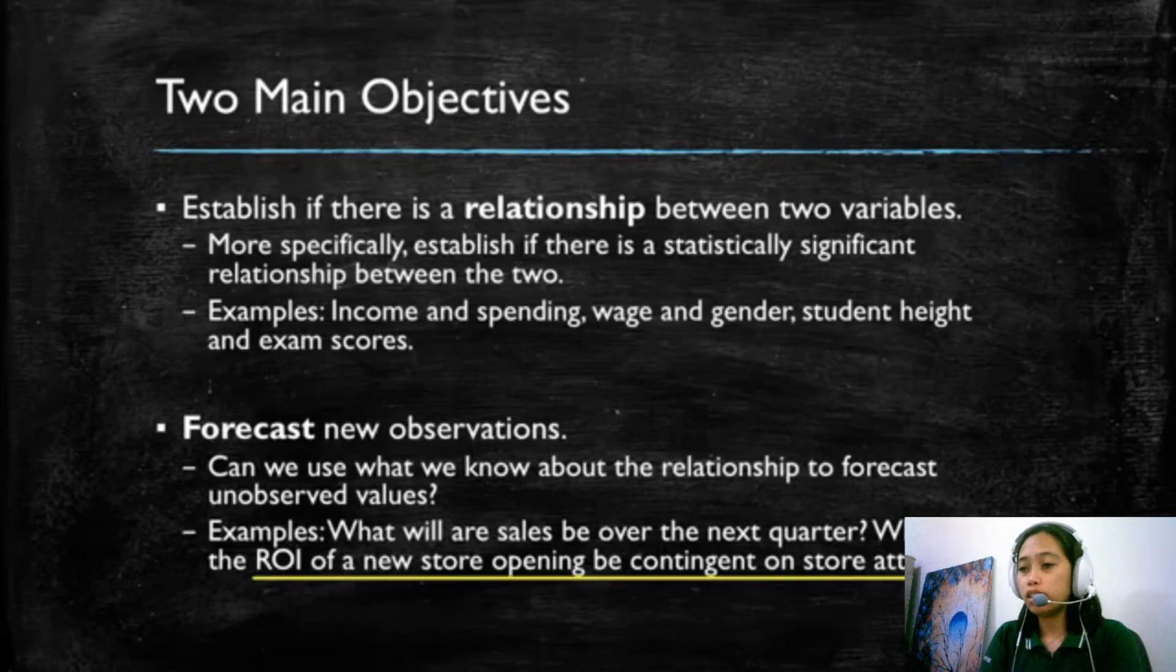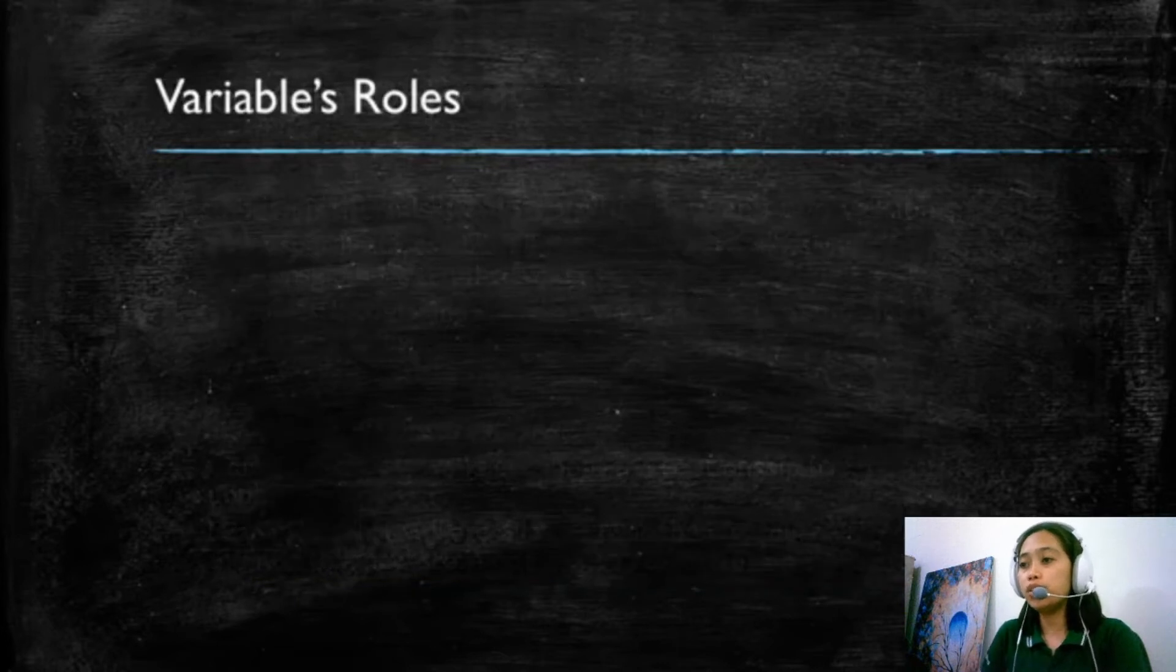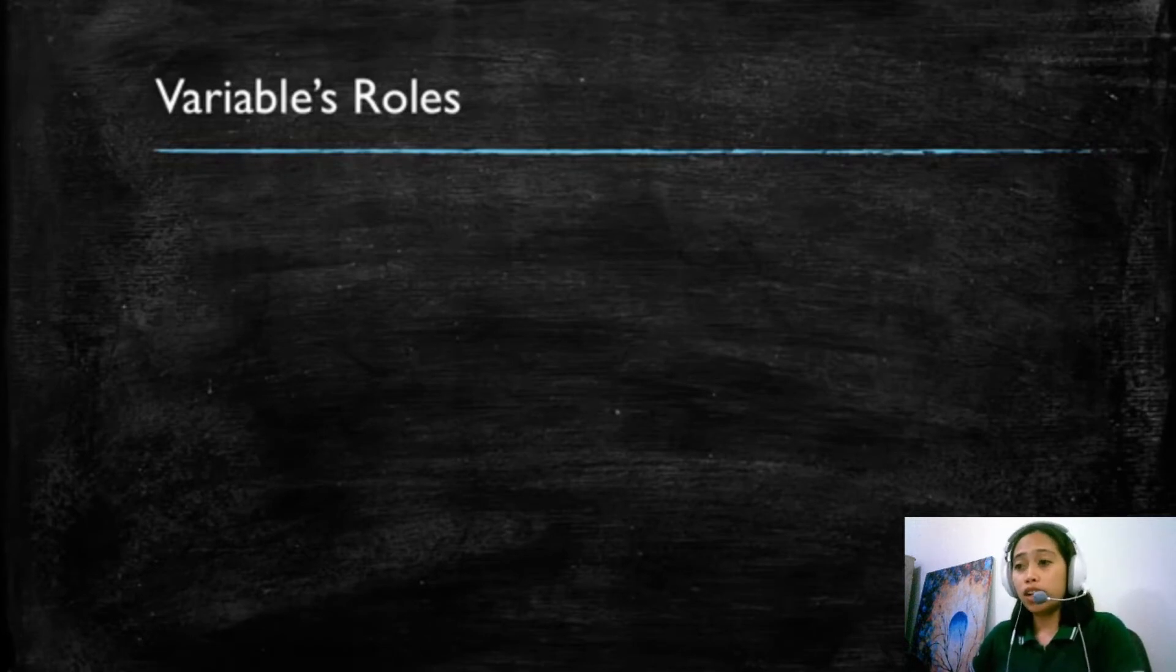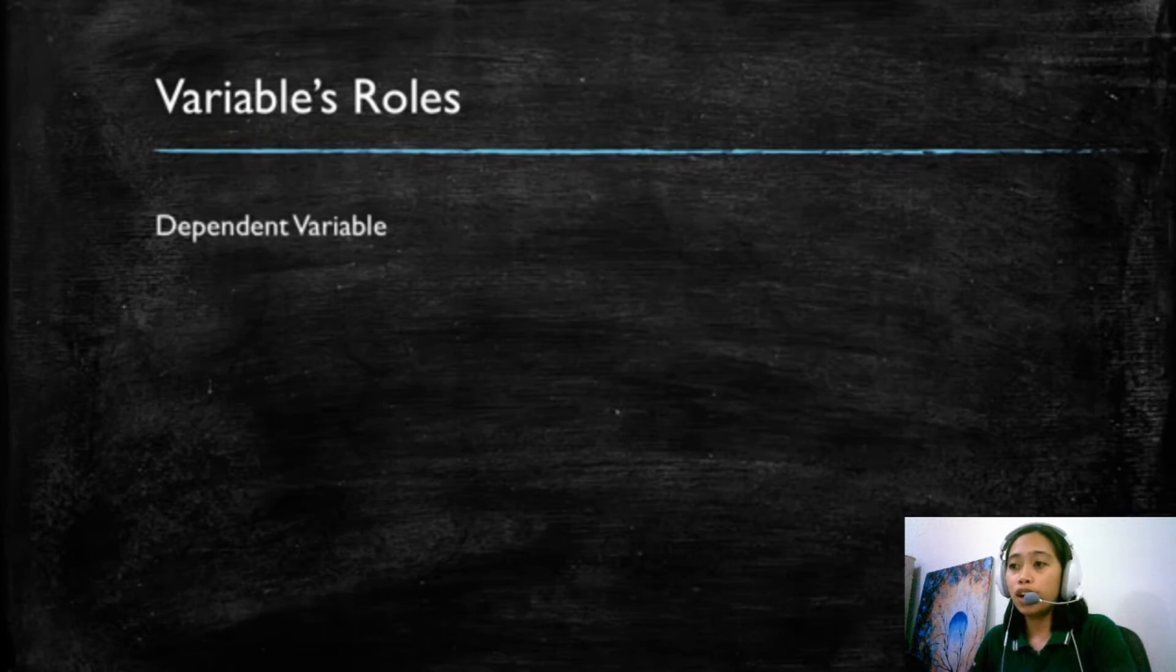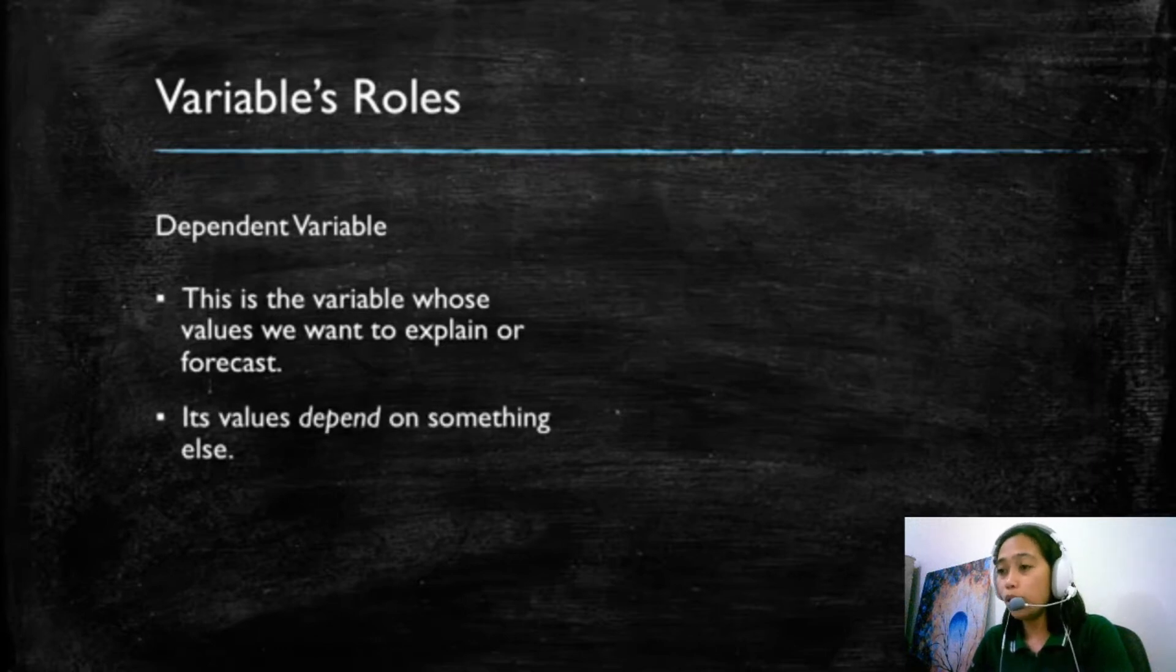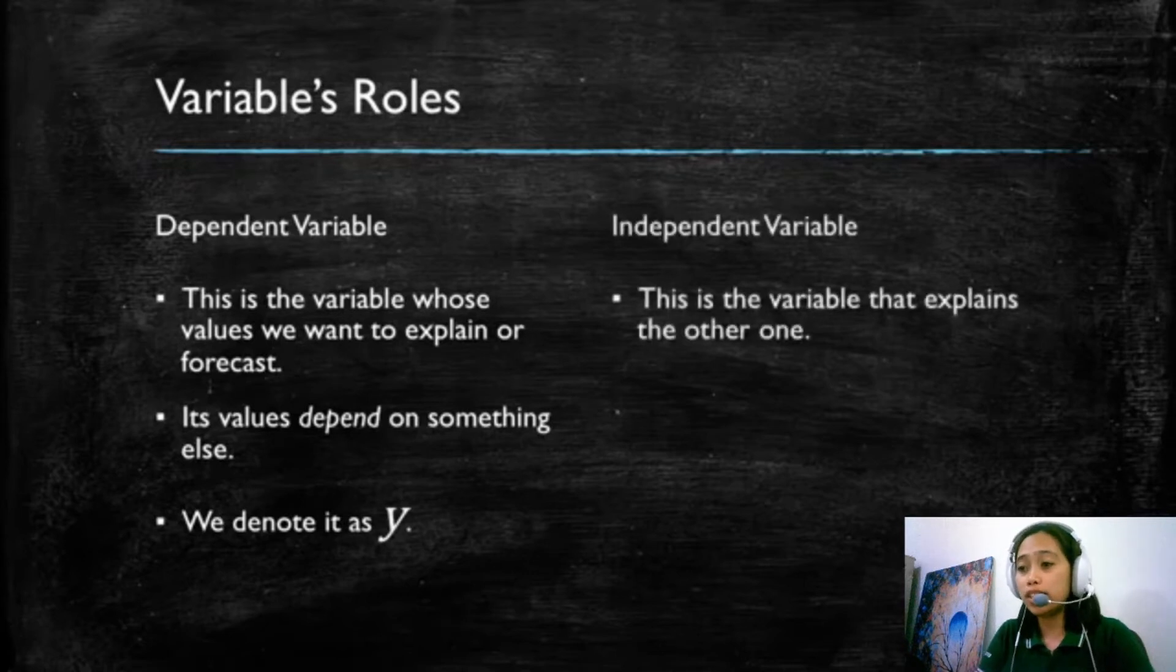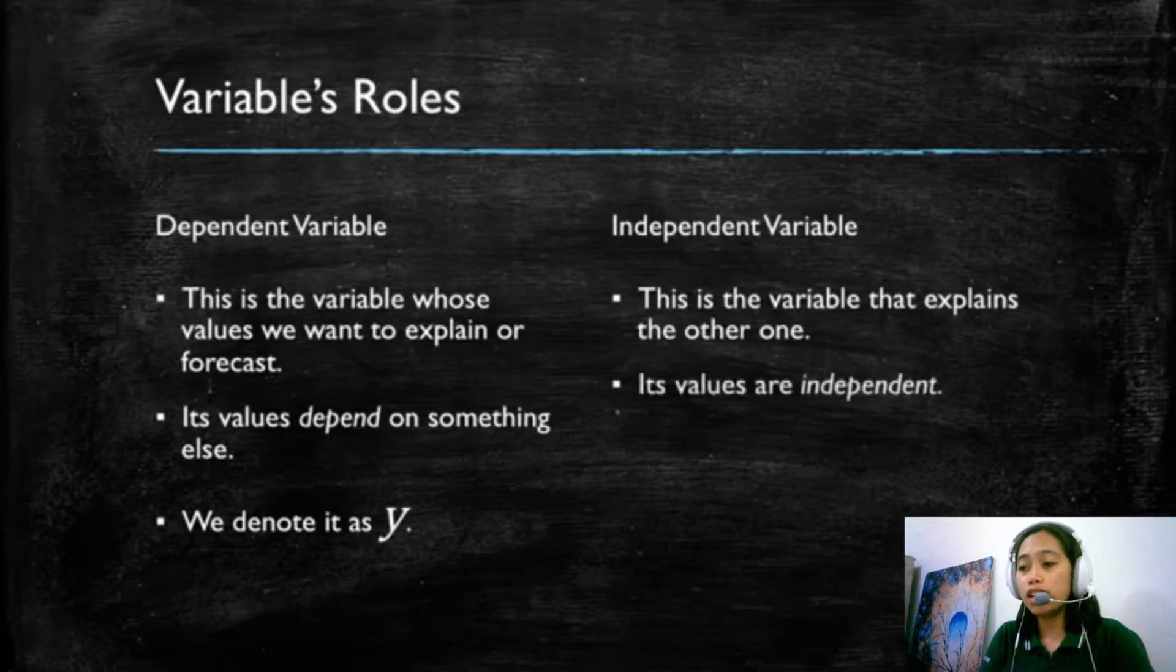In general, we're going to talk about two different roles that variables play in regression models. The first one is going to be the dependent variable. This is the variable whose values we want to explain or forecast and we call it the dependent variable because its values depend on something else and we will be denoting it as Y. The other role is that of independent variable and this is the variable that explains the other one. And we say that its values are independent, hence its name, and we will denote this variable as X.